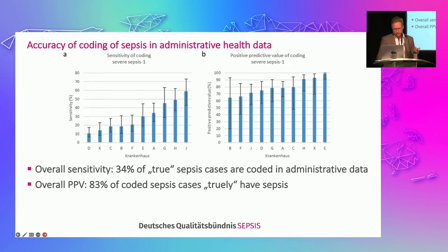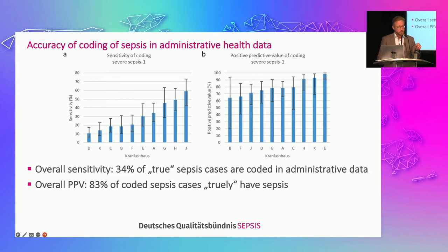Here is what we found: the left-hand diagram shows the sensitivity of ICD-10 codes and administrative data to identify patients with sepsis. Overall, we had 34% sensitivity, which means of the true sepsis cases identified in the charts, only one-third received a sepsis code in administrative data. There was also large variation in sensitivity between hospitals, from 10% to up to 60%. When we looked at patients who did receive an ICD-10 code for sepsis, the majority — more than 80% — truly had sepsis. So we have predominantly a problem of under-coding of sepsis, not over-coding.